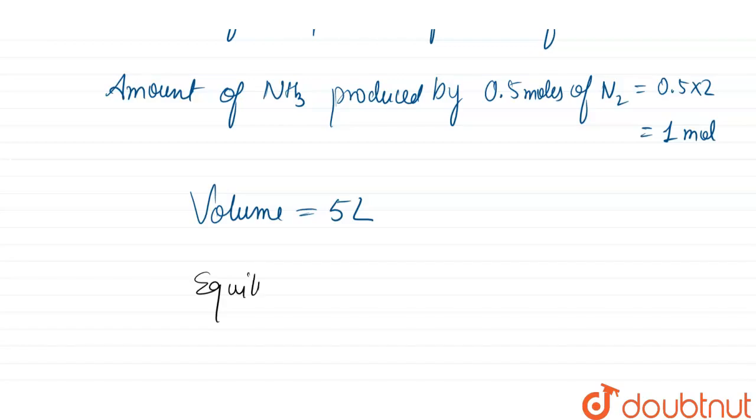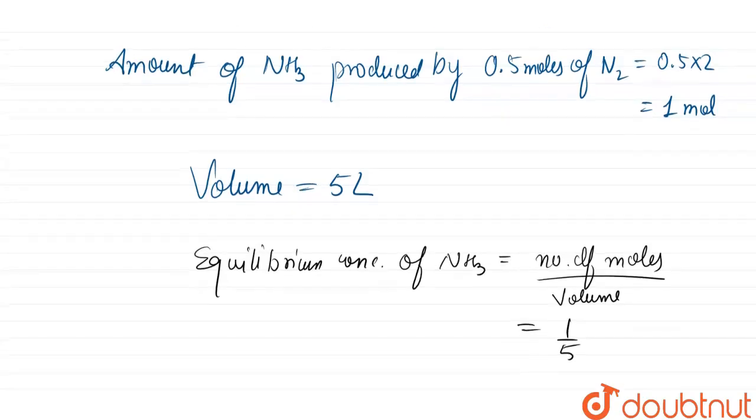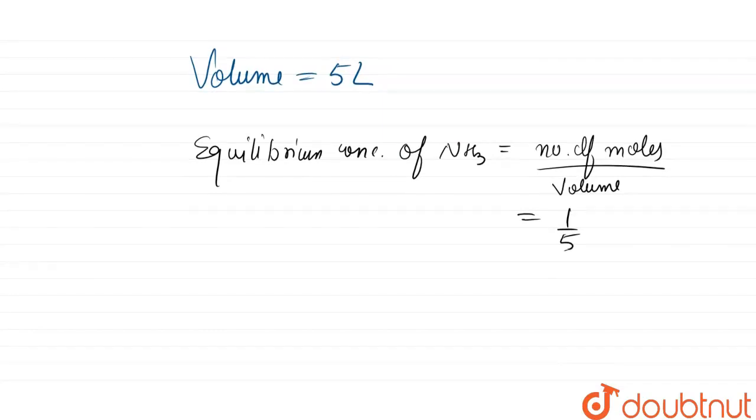So from here can we calculate the equilibrium concentration of NH3. Equilibrium concentration of ammonia is equal to number of moles divided by volume, so number of moles is that we have calculated